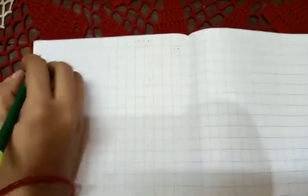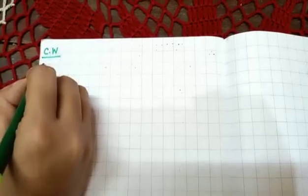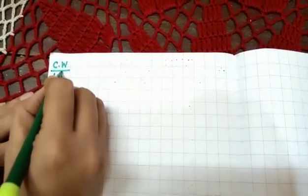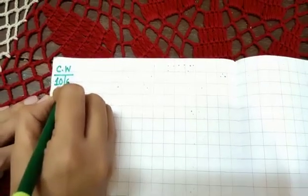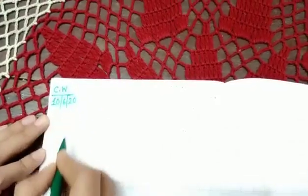Okay children, now first of all in the left side of your copy write CW date. CW, C dot W, give slipping line and then write today's date. Today's date is 10/6/2020.